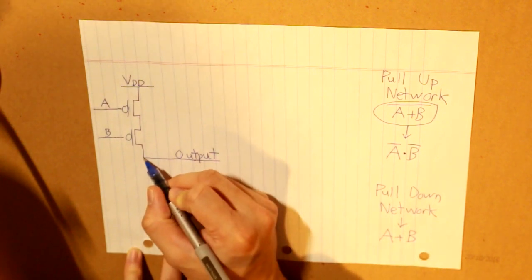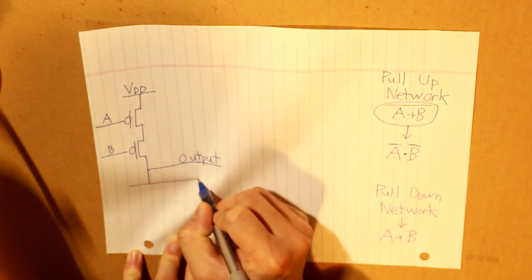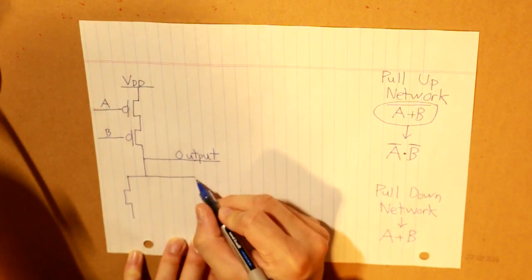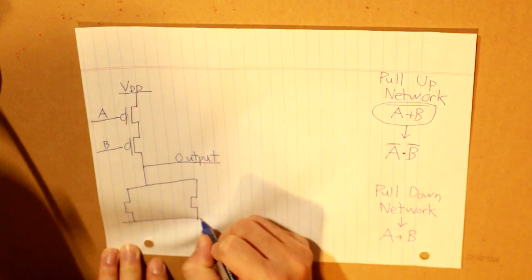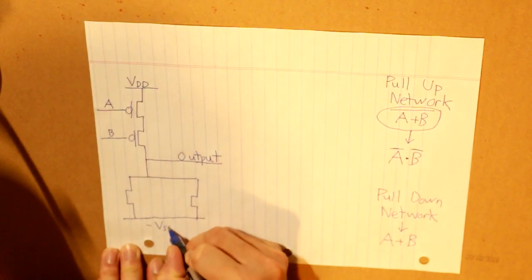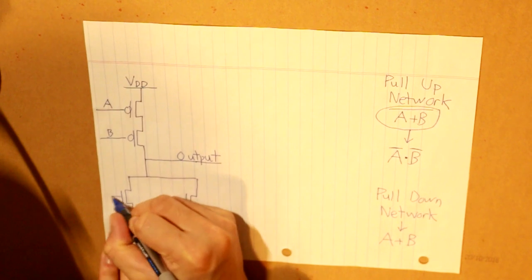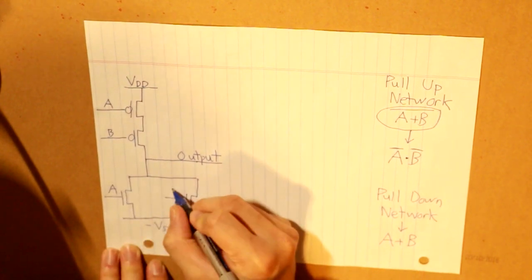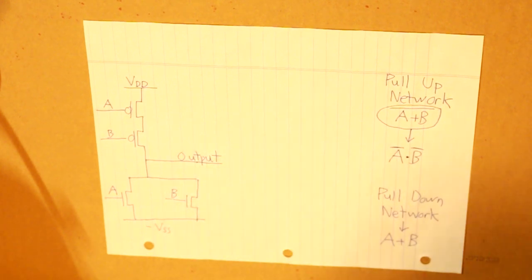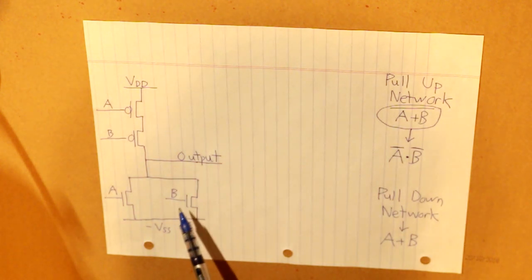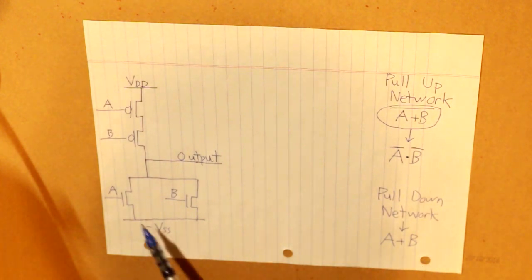And for our OR gate, it will look like this. So as I've discussed, again, our inputs would be just A and B. There's no inverse for that. So now that we've got our NOR gate, let's apply, let's put in the inverter.